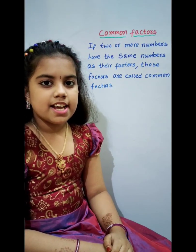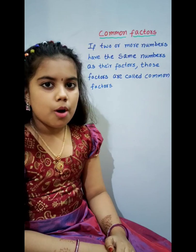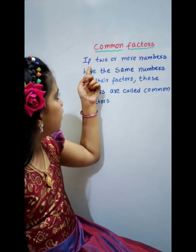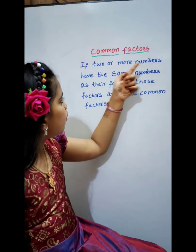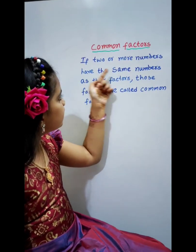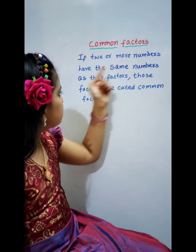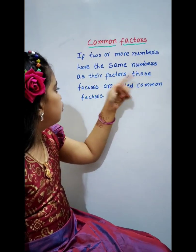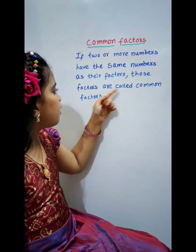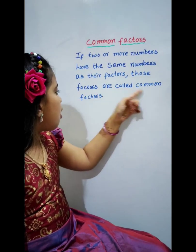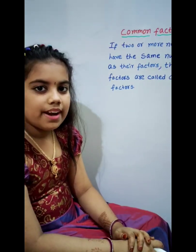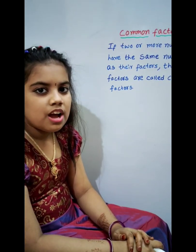First we will discuss about Common Factors. If 2 or more numbers have the same numbers as their factors, those factors are called Common Factors. For example,